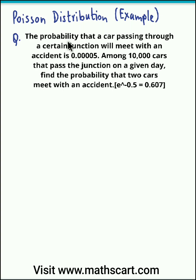The question is: the probability that a car passing through a certain junction will meet with an accident is 0.00005. Among 10,000 cars that pass the junction on a given day, find the probability that 2 cars meet with an accident.